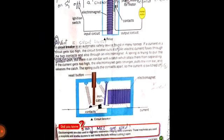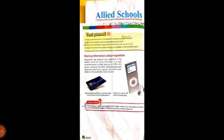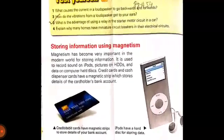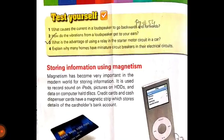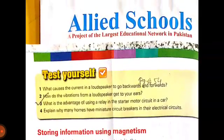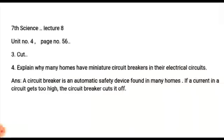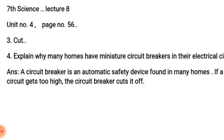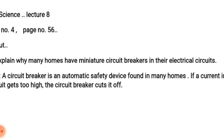Now we have test yourself questions. Question number 4: Explain why many homes have miniature circuit breakers in their electrical circuits. The answer is that a circuit breaker is an automatic safety device found in many homes.